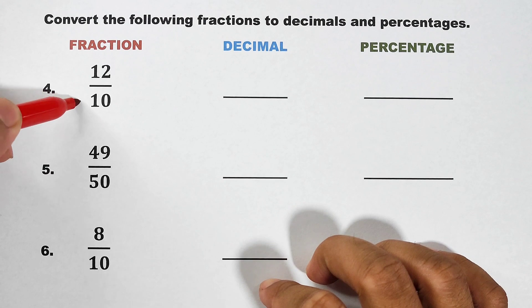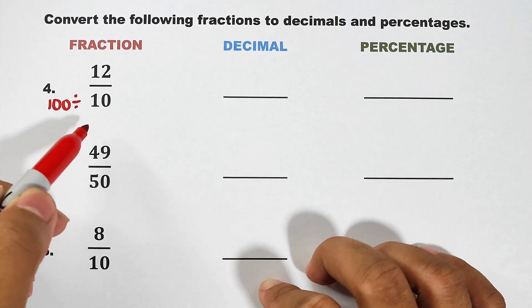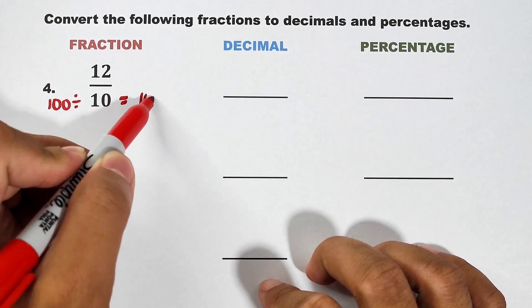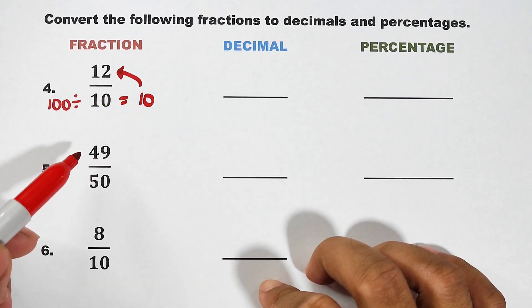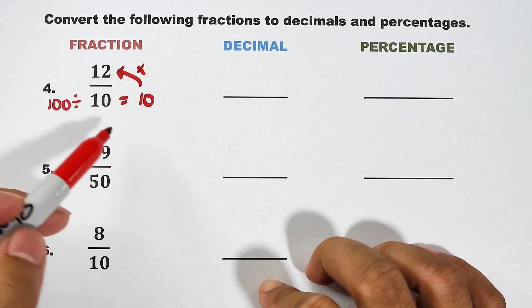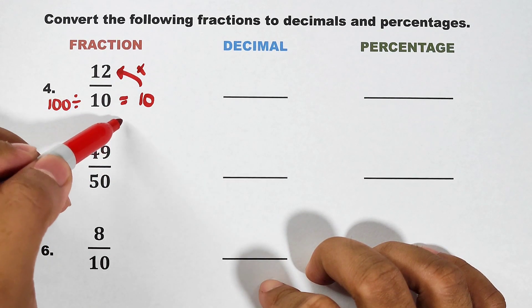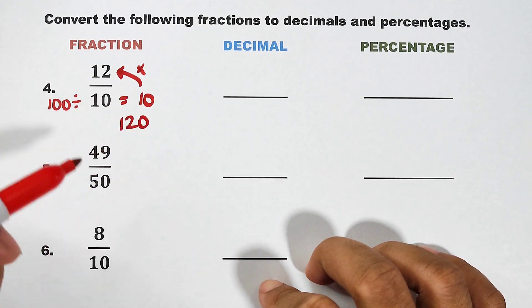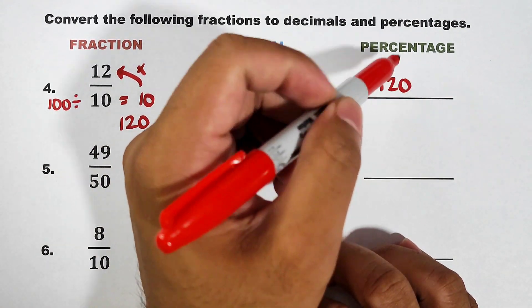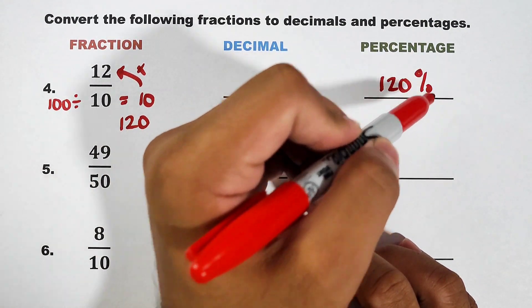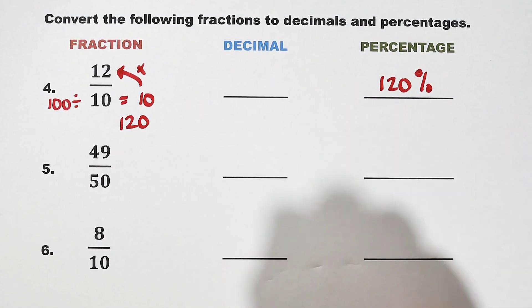So let me show you. Divide 100 by the denominator. 100 divided by 10, that is equal to 10. And then multiply your 10 by 12. 12 times 10 or 10 times 12 is 120. Get this number, 120 percent. As you can see, that is greater than 100%.